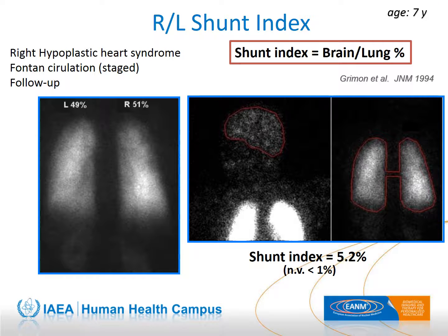The shunt index proposed by Greenman is quite simple. It calculates the brain-to-lung percentage and was validated on a large group of patients. It is particularly useful in evaluating the presence and severity of intrapulmonary shunts, which can arise for instance after Fontan correction or in severe liver disease. It is sufficient to draw a ROI encompassing both lungs and a ROI on the brain in the same image. The activity in the brain is normally less than 1% of the pulmonary activity.